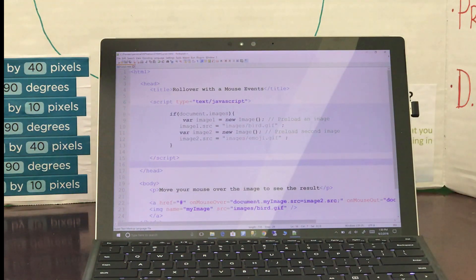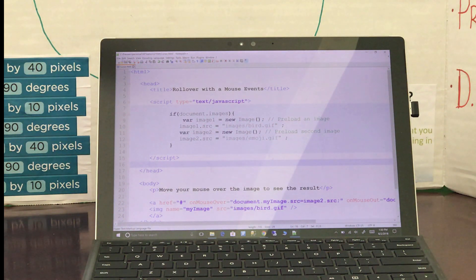So first we have the head section which contains the title. Then we have the script section where we write the JavaScript code. In the script section we have an if condition.